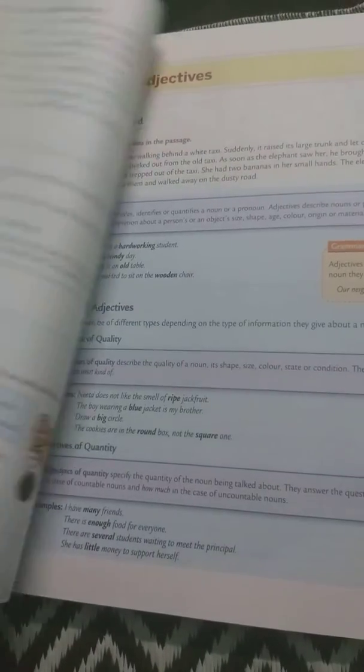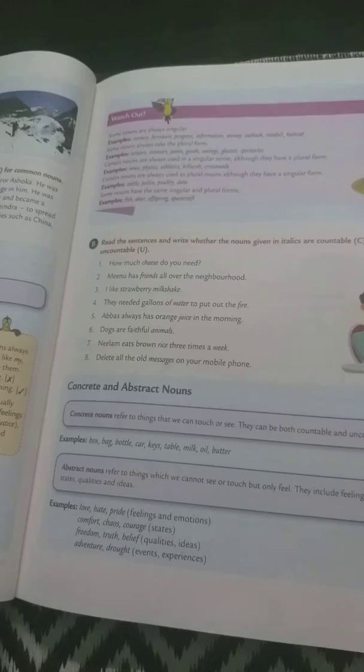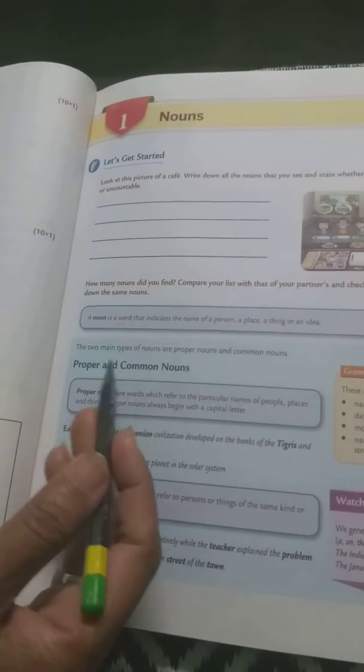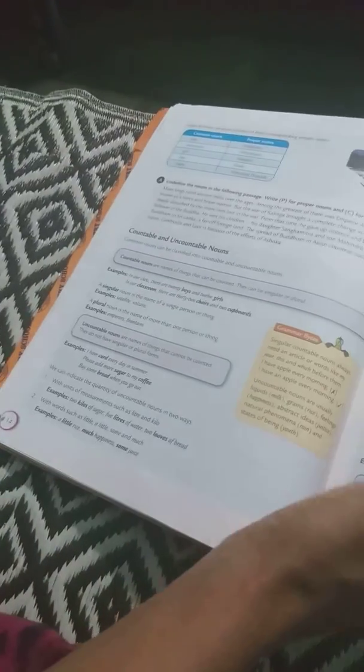Now how many kinds of nouns can we come to know? We can come to know about first number one, common noun, proper noun. Next one is your concrete noun, abstract noun.